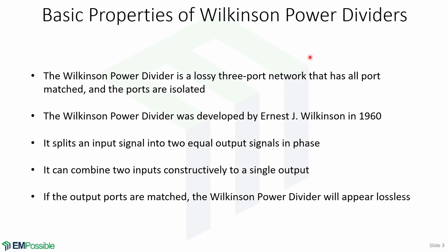The lossless T-junction divider suffers from the disadvantage of not being matched at all ports and it does not have isolation between output ports. The resistive divider is matched at all ports, but even though it is not lossless, isolation is still not achieved.